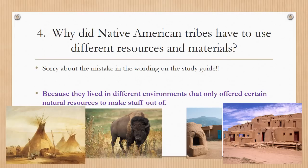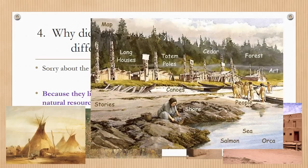Number four: why did Native American tribes have to use different resources and materials? Because they lived in different environments that only offered certain natural resources. On the Great Plains you won't see many trees, so the Lakota Sioux could not live in longhouses — they would have used the buffalo. In the Pueblo region, buffalo did not roam the Great Basin and Range, so they used sand and stone turned into thick clay and brick to make their homes. The Kwakiutl lived in forests so trees were very important, and they lived near the sea so they could eat salmon, whereas the Lakota Sioux could not.